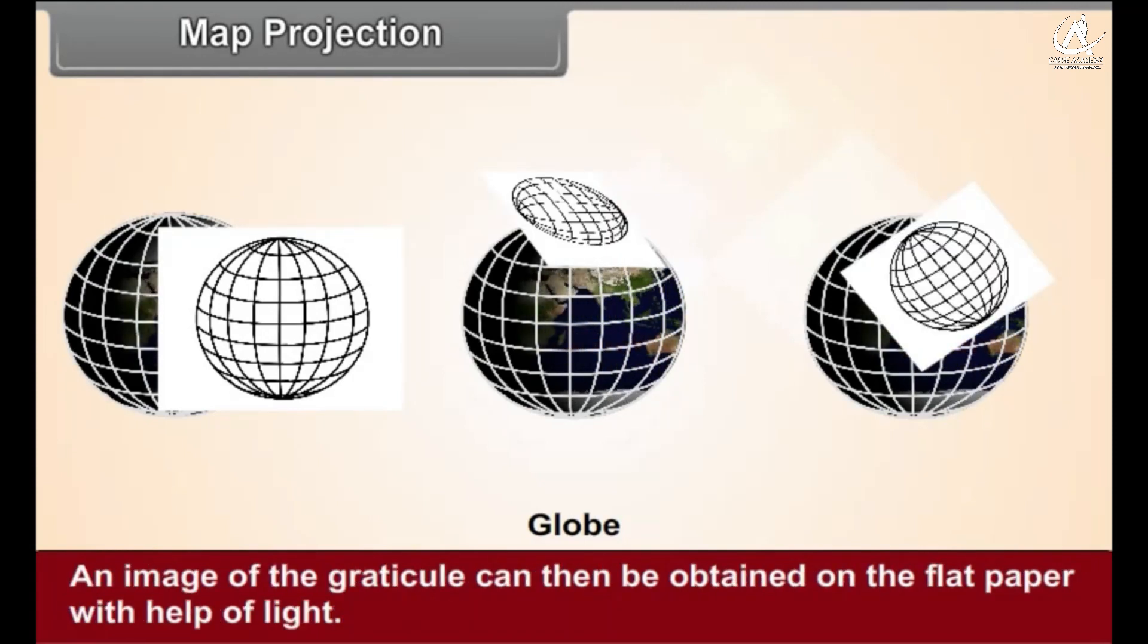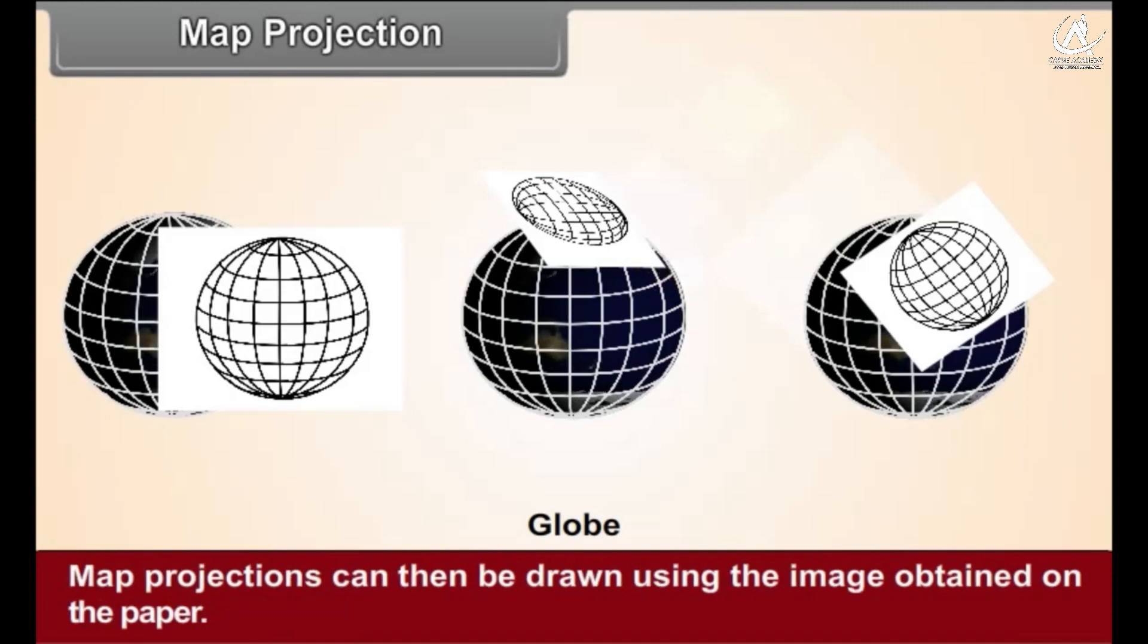An image of the graticule can then be obtained on the flat paper with the help of light. Map projections can then be drawn using the image obtained on the paper.